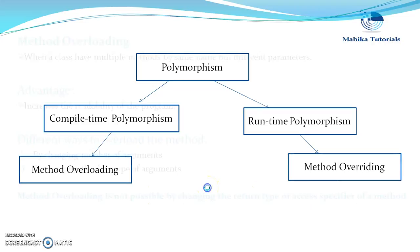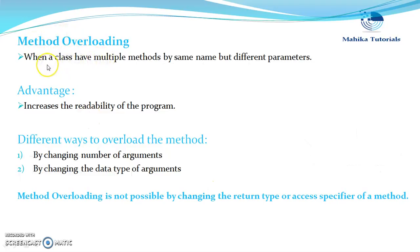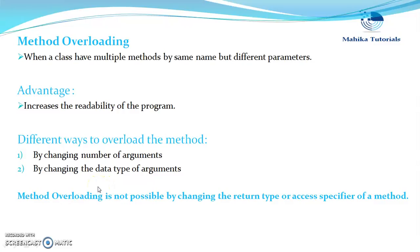Method overloading means when we have multiple methods with the same name but different parameters in a class. This is done to increase the readability of a program. We can give multiple methods the same name as long as their parameter list is different. Method overloading can be achieved by either changing the number of arguments or by changing the data type of arguments. We cannot achieve method overloading by changing the return type or the access specifier of a method.